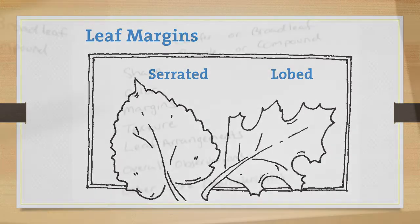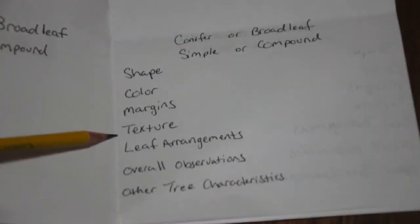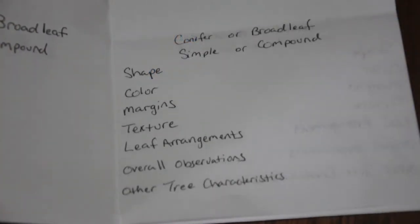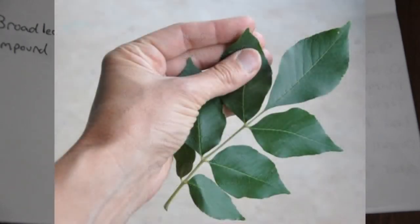We'll also want to take note of the leaf's texture. Some leaves are completely hairy, others have hairs only on one side, and others are completely smooth. Leaves may also be thick or thin, rough, or waxy.